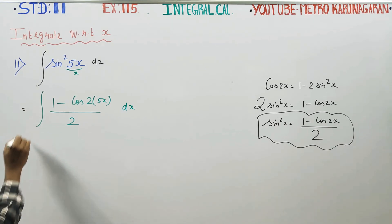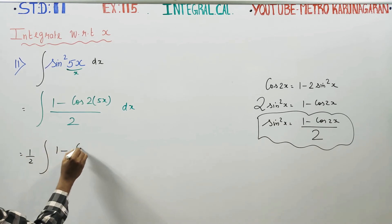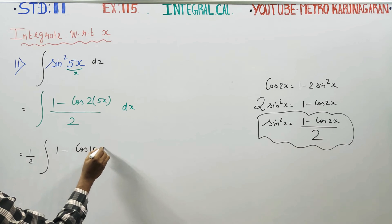1 by 2 common value at the panna kudadh. Integration of 1 minus cos 10x dx. Now you can integrate.